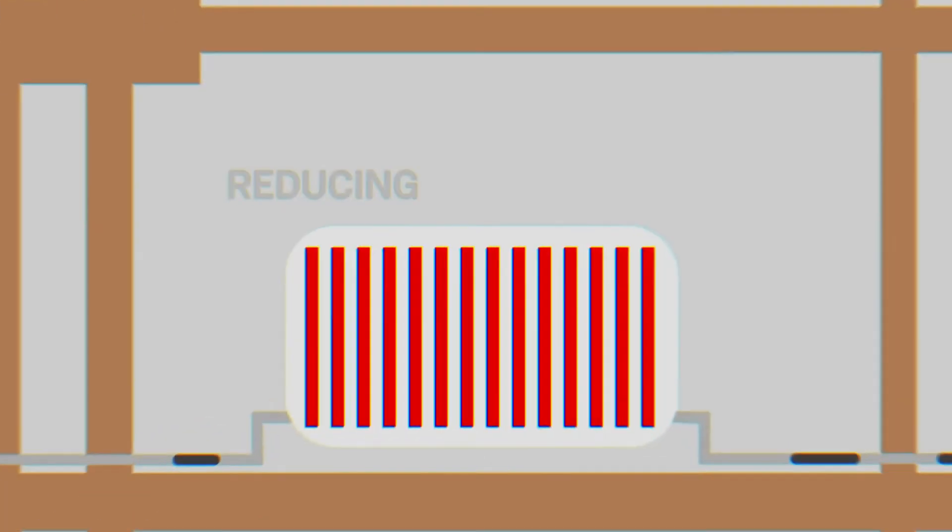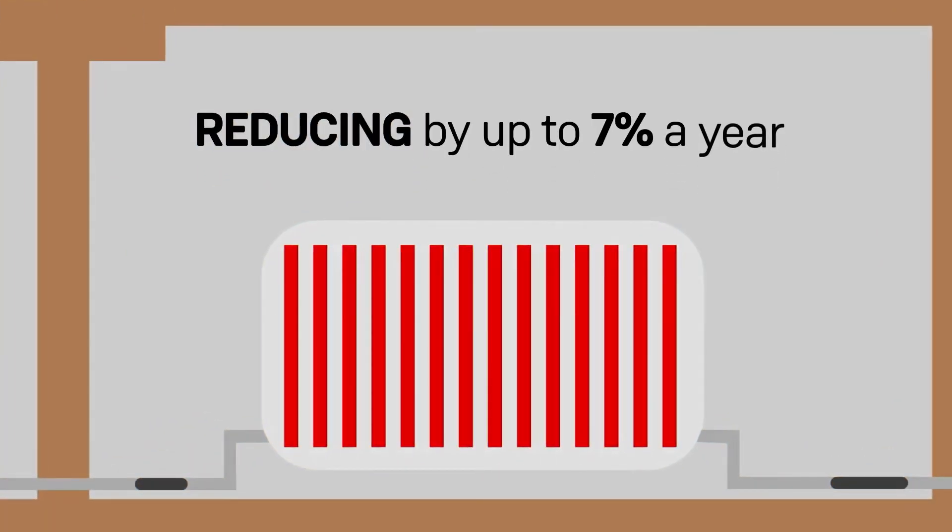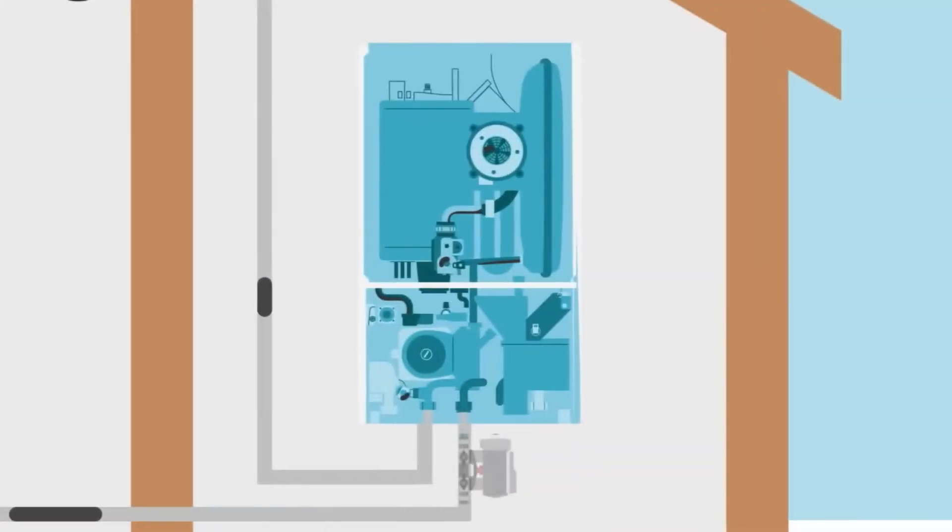And with an AD MagnaClean filter, your boiler is protected, which means it doesn't have to work so hard, saving you as much as 7% off your annual gas bill.